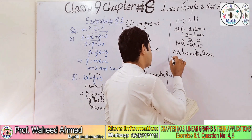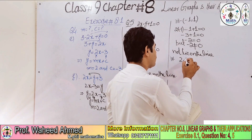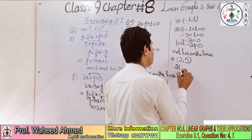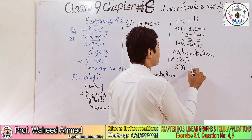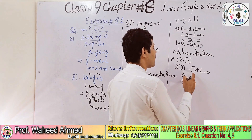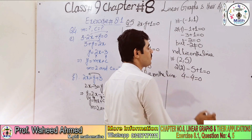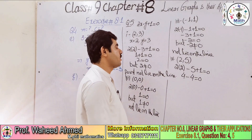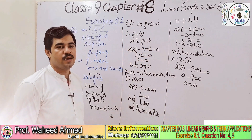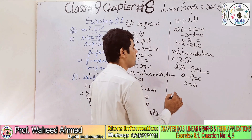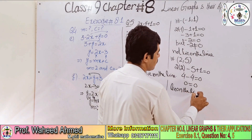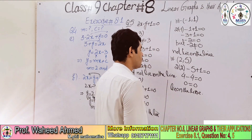Part 4: the point is (2, 5). So x = 2 and y = 5. Applying: 2 × 2 - 5 + 1 = 0. That gives 4 - 5 + 1 = 0, which is 0 = 0. Since both sides are equal, the point (2, 5) lies on the line.